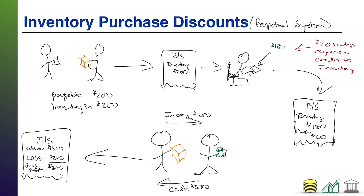You might say, 'don't we want $200 in assets — doesn't it look bad to only have $180?' Remember, you spent $20 less cash, so in addition to the inventory of $180, you still have $20 cash. You still have $200 in assets total — it's just a different mix. You still look good to investors.